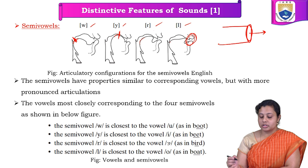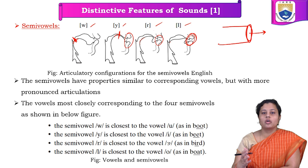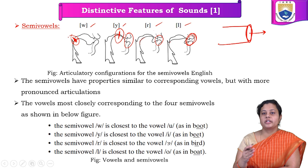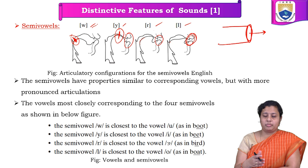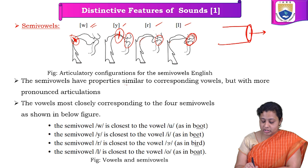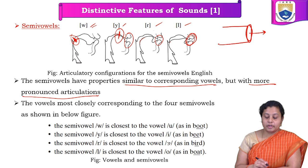The opening in the mouth is created for the smooth flowing of airflow to pass out, and the obstacle is created by the tongue tip depending on where it is placed. Based on the different positions of the tongue tip, different sounds are generated. Semi-vowels have properties similar to the corresponding vowels but with more pronounced articulations.